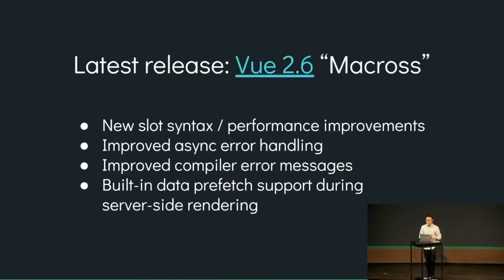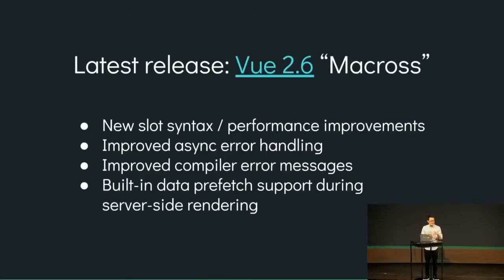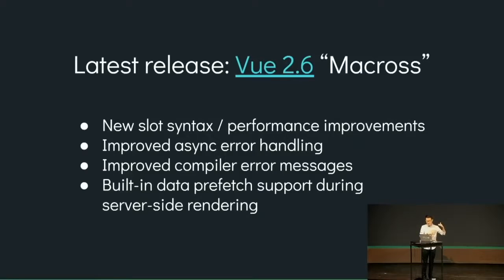The latest release is Vue 2.6, codenamed Macross. One of the most important things introduced is the new slot syntax — we had an RFC for it. It also comes with improved asynchronous error handling: if you use async functions for lifecycle hooks, errors during the async process will now be captured by Vue's error handlers, so you can more easily send them to your error-tracking services.